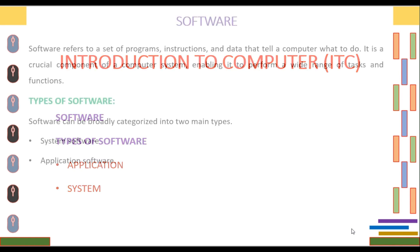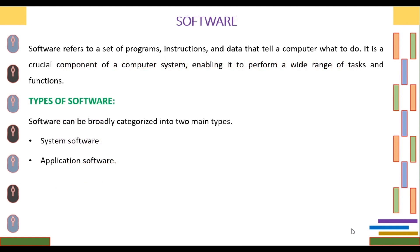First of all, we will see what is software. Software refers to a set of programs, instructions, and data that tell a computer what to do. It is a crucial component of a computer system, enabling it to perform a wide range of tasks and functions. Now we will study types of software.